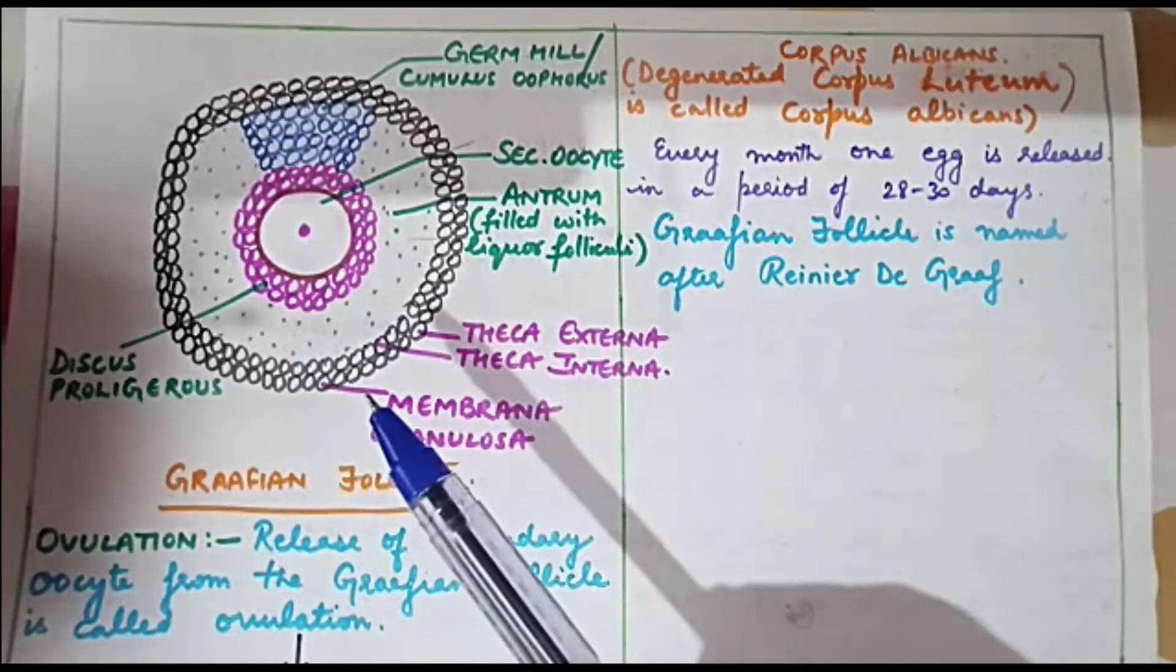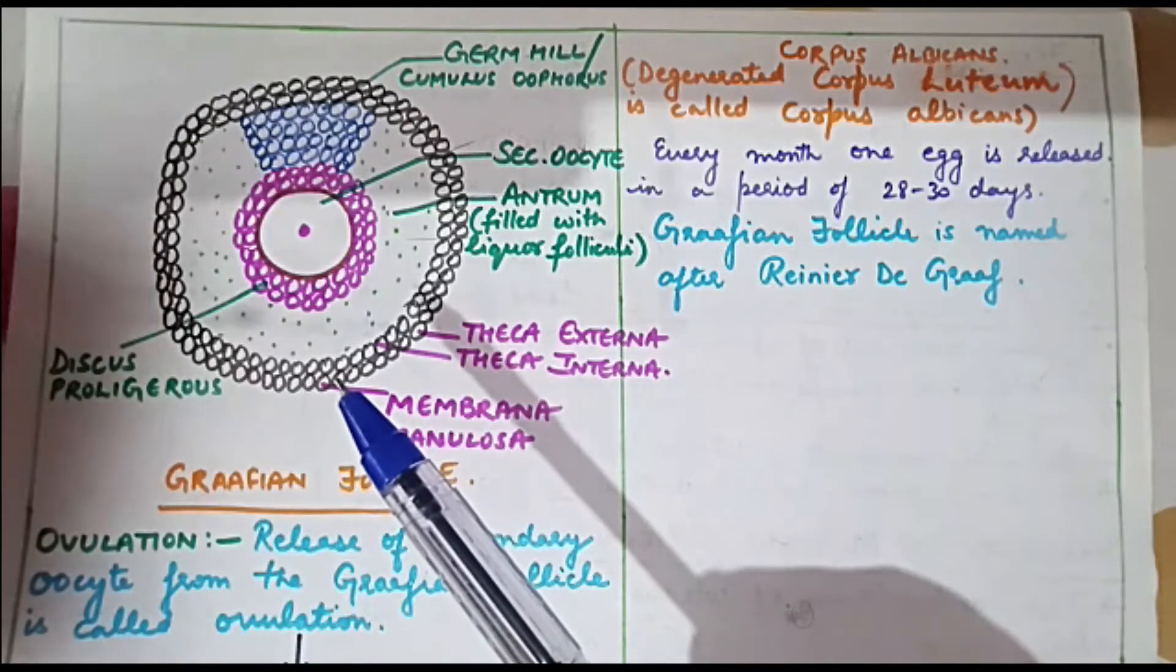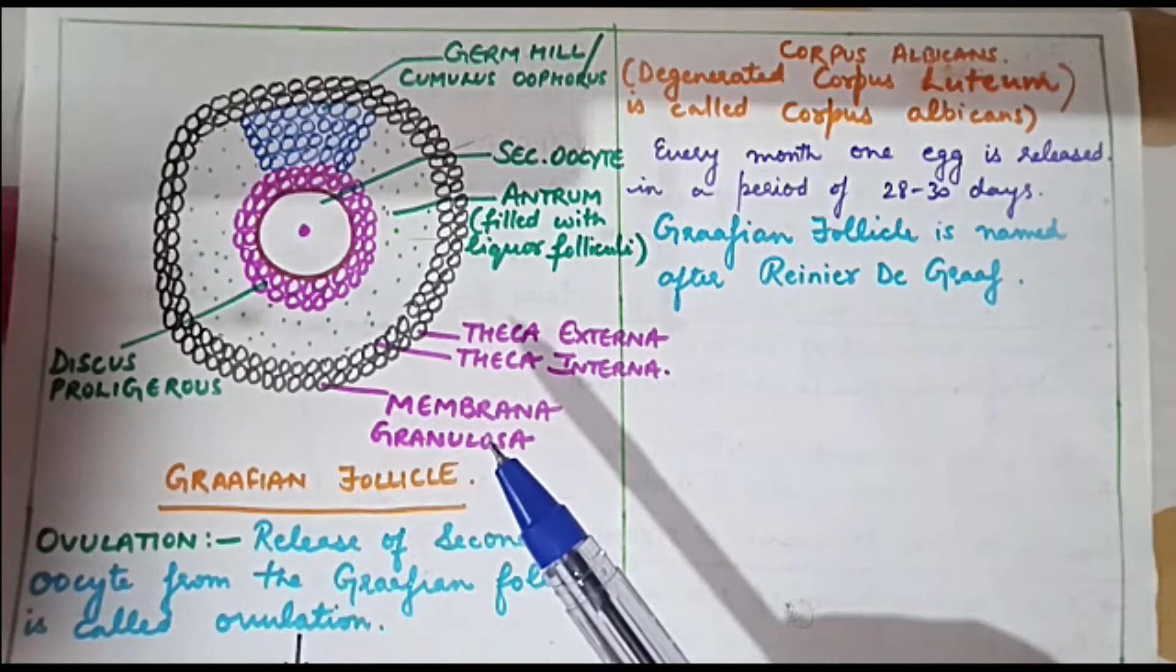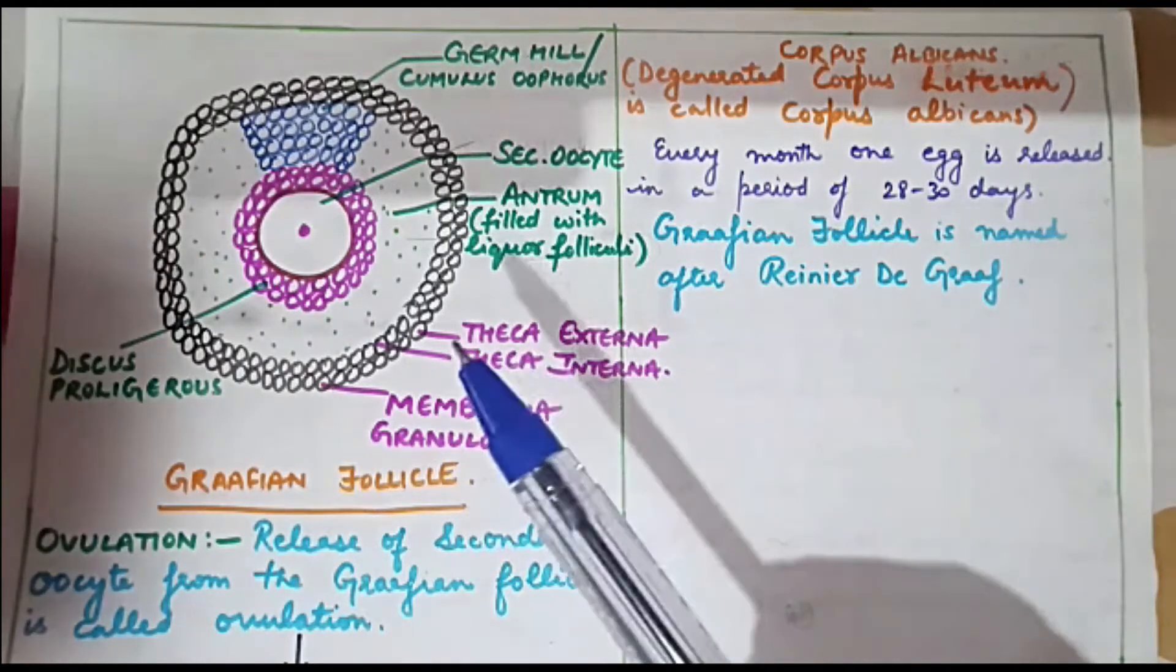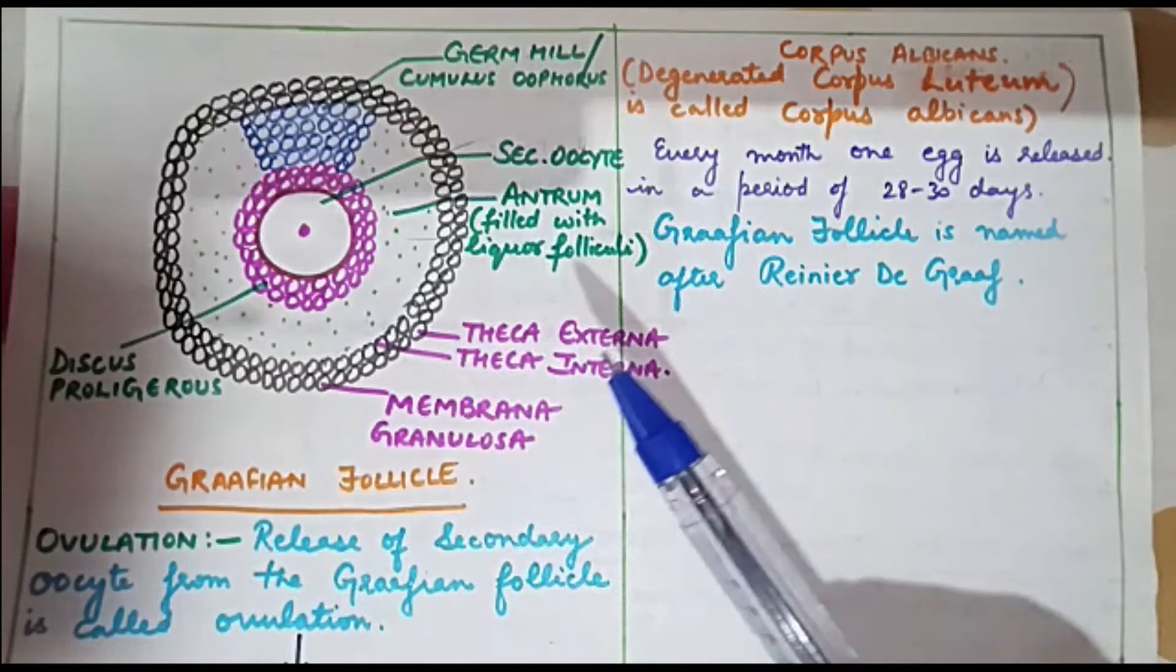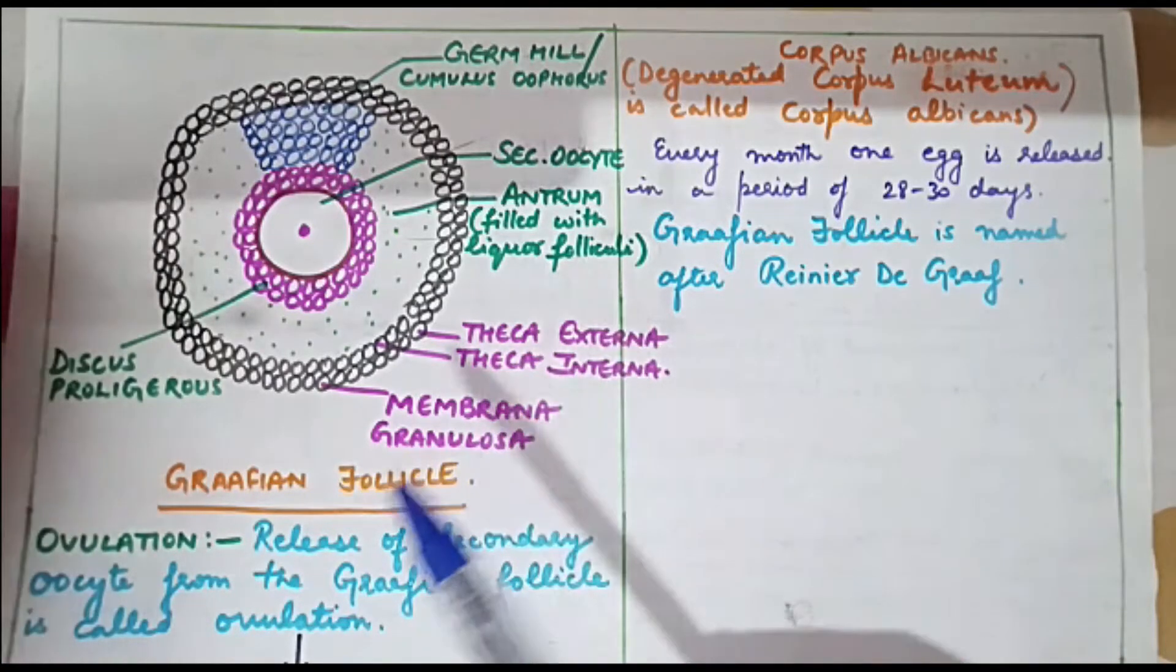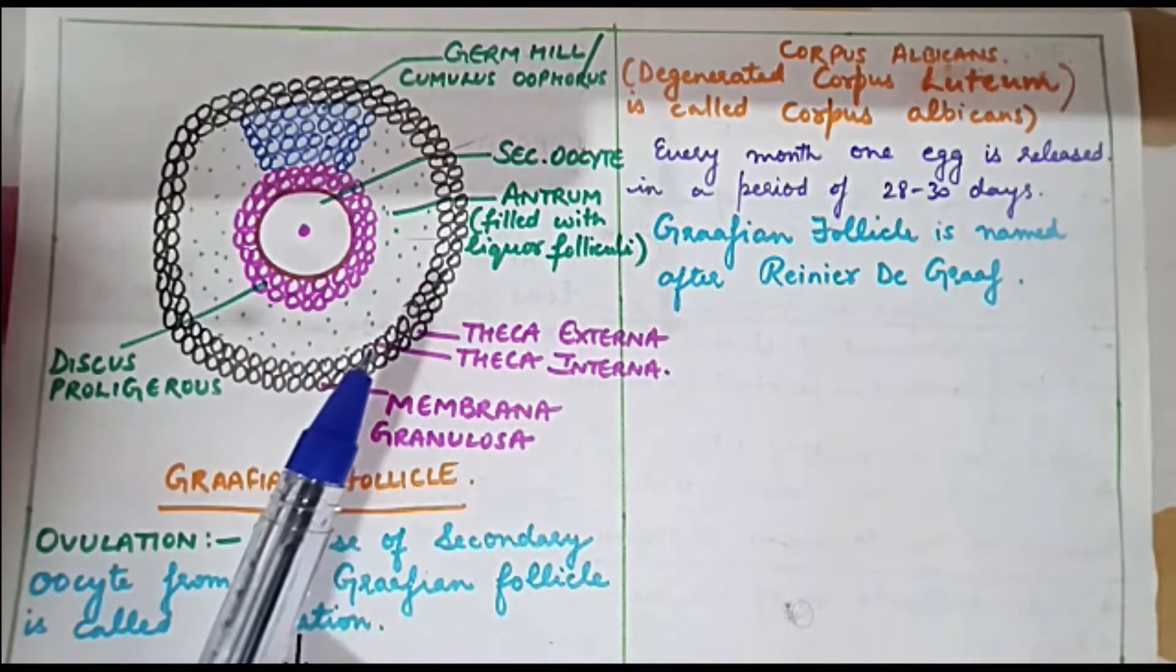On the outside of Graafian follicle there is a layer of cells which form membrana granulosa. Membrana granulosa has two layers: theca externa and theca interna. Theca externa is present on the outer side and theca interna is present on the inner side.